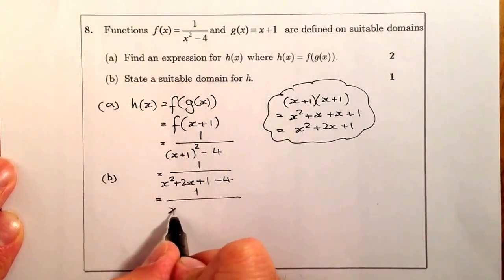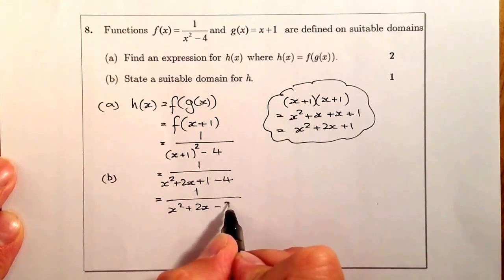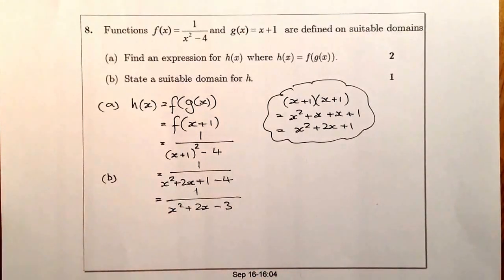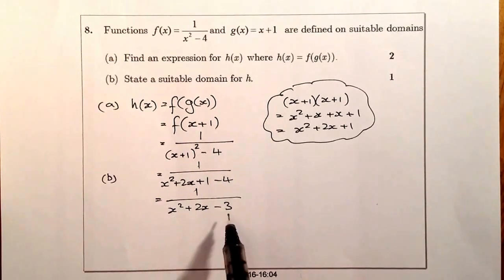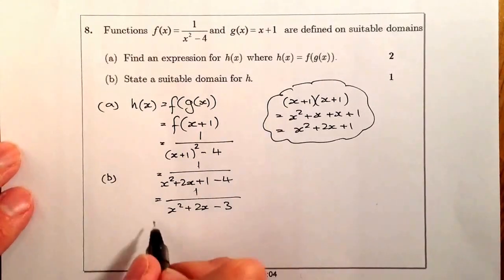On the bottom there, what I've got now is I've got x squared plus 2x, and when I gather these numbers together, I've got minus 3. So I've got a trinomial on the bottom, a quadratic in some way. So what I can do then is I can try and factorize that and put it into two brackets.